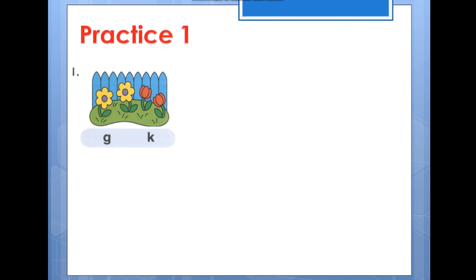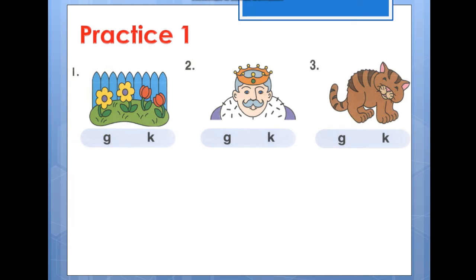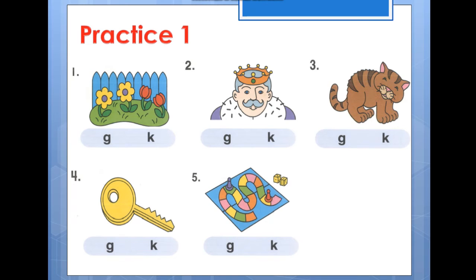Everyone, after you read the words, now let's practice. You just listen and spell the sound of G or K. Ready? Number one: garden, garden. Number two: king, king. Number three: kitten, kitten. Number four: key, key. Number five: game, game. Number six: goat, goat.